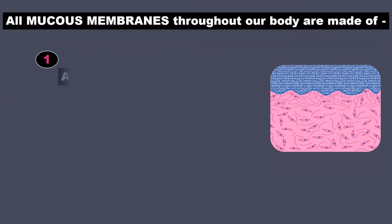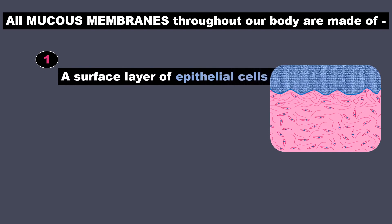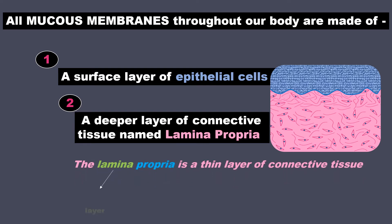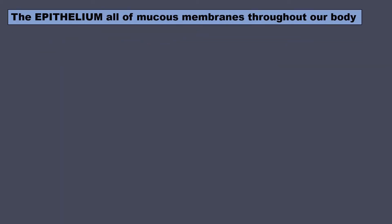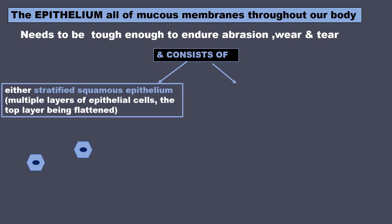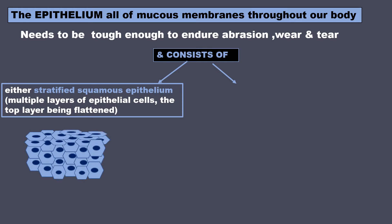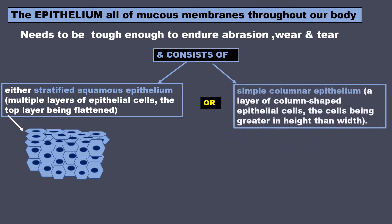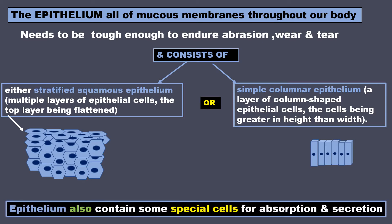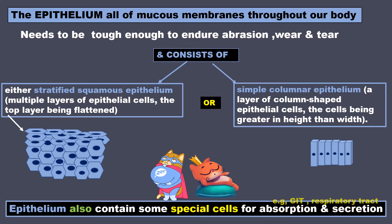All mucus membranes found throughout our body are made of: (1) a surface layer of epithelial cells, and (2) a deeper layer of connective tissue named lamina propria — a thin layer of connective tissue. Lamina means layer, and propria means one's own character; this connective tissue has its own special characteristic features. The epithelium must be tough enough to endure abrasion, wear and tear, and consists of either stratified squamous epithelium — multiple layers with a flattened top layer — or simple columnar epithelium, with column-shaped cells greater in height than width. Epithelium also contains special cells for absorption and secretion, like in the GI tract or the respiratory tract.